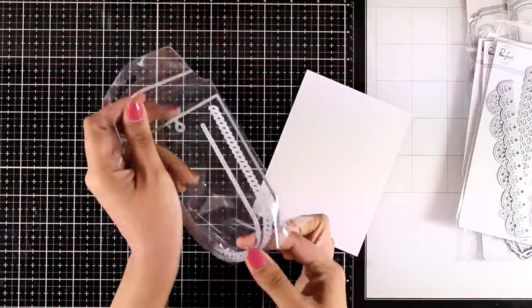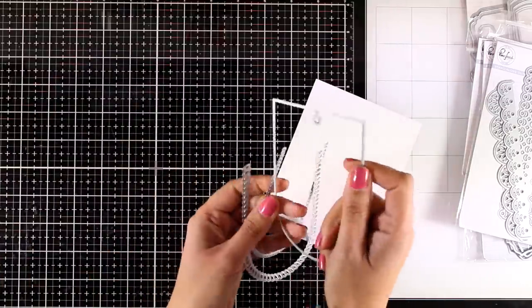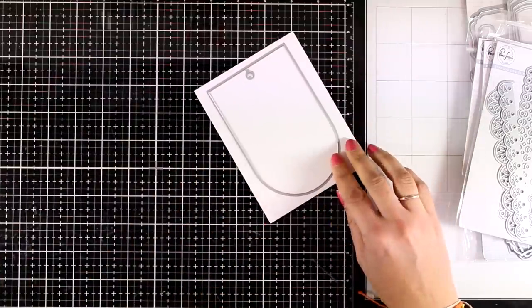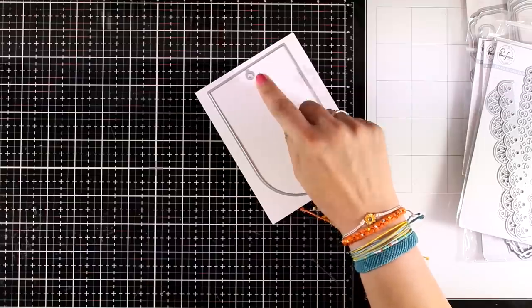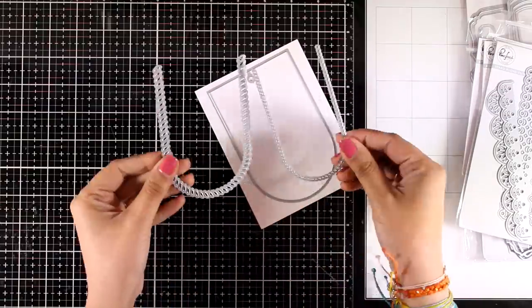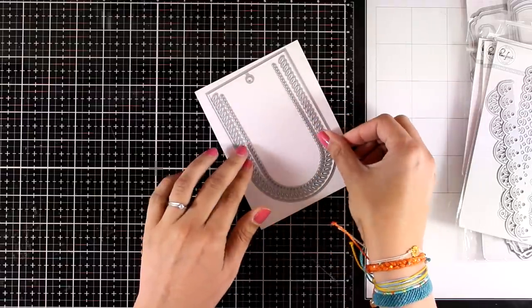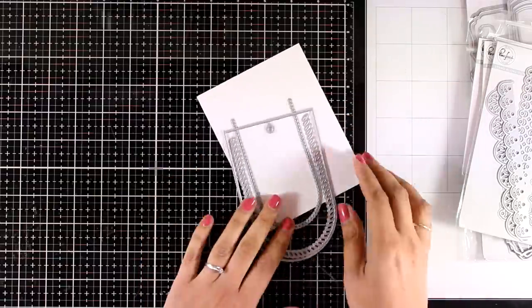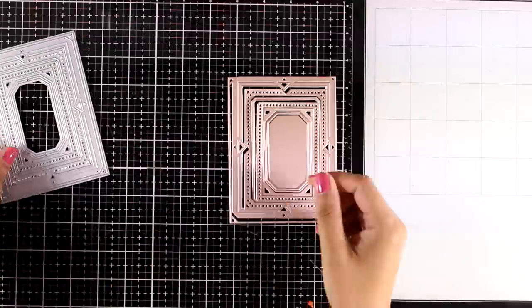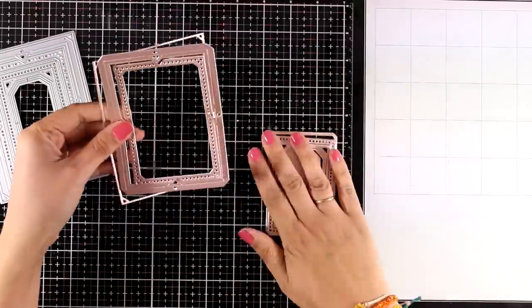This is another die set called Braided Tag. It gives you this unique shape of a tag along with the hole at the top, and it comes with two more decorative dies that you can nest inside to give more interest on your cutout.